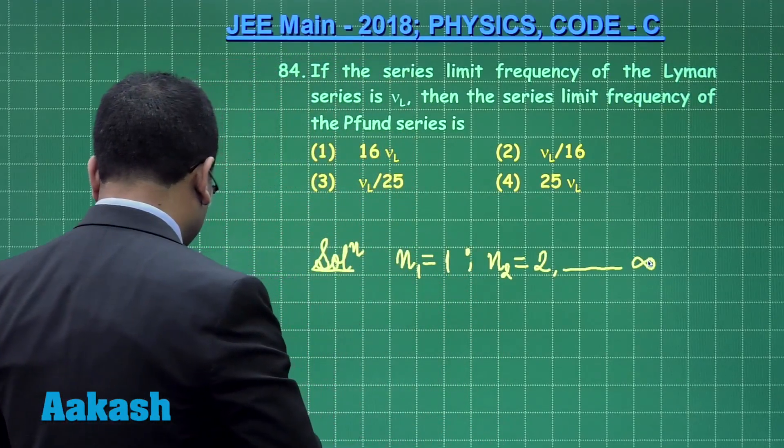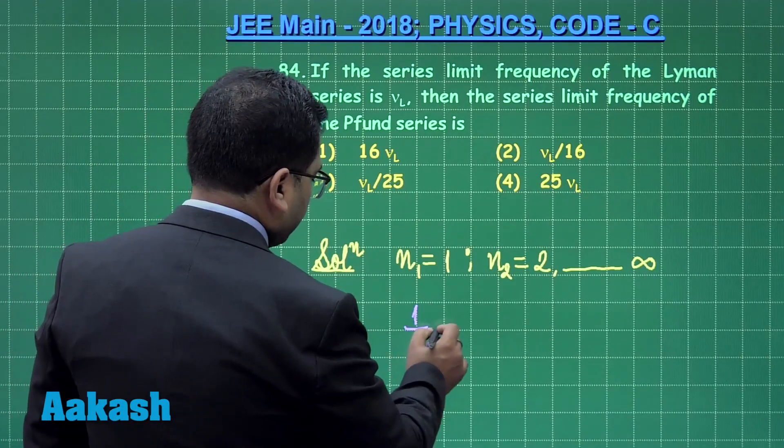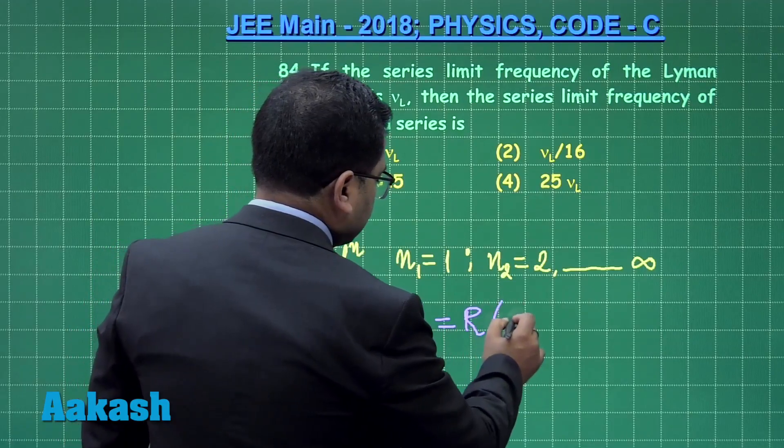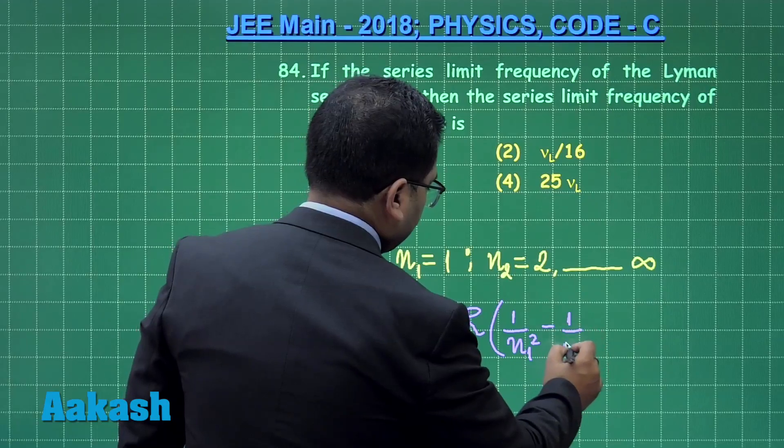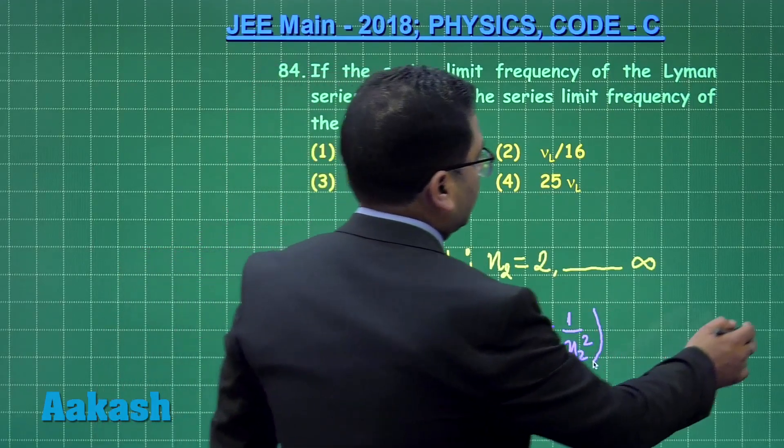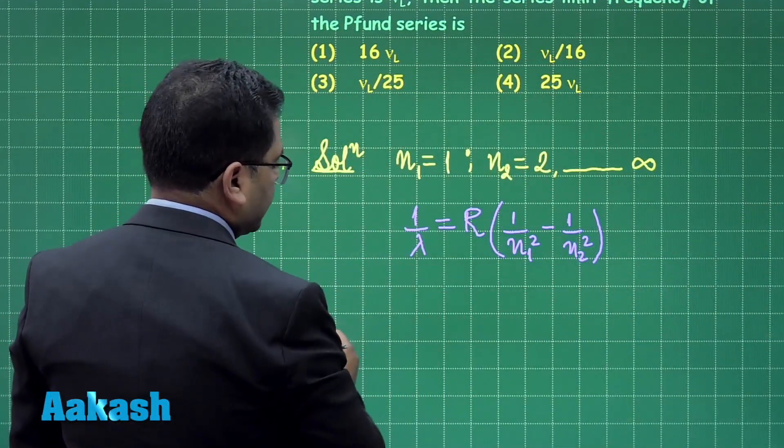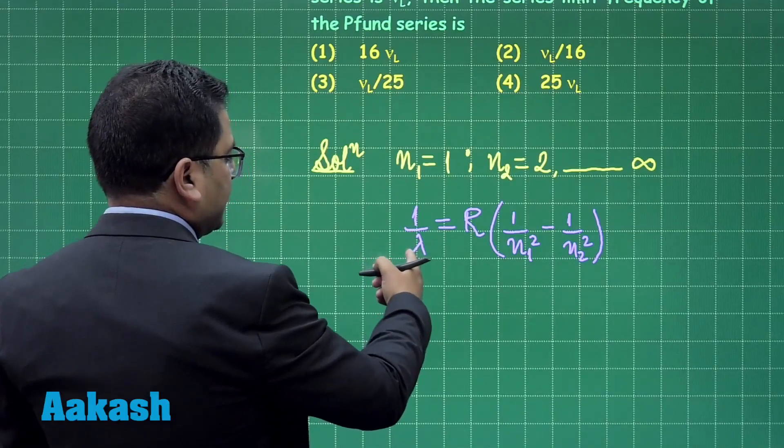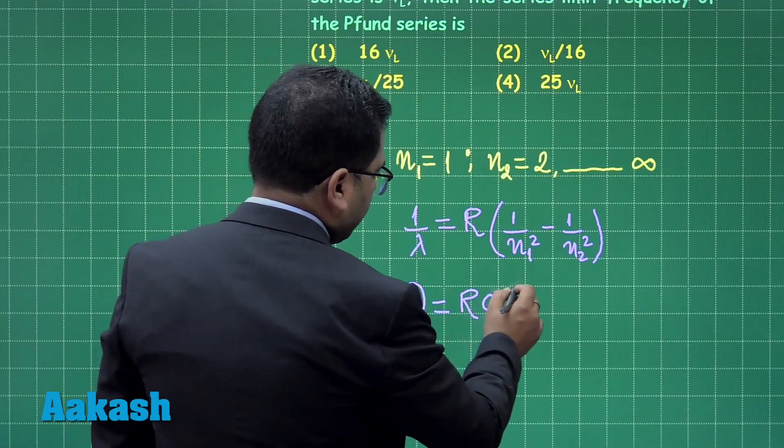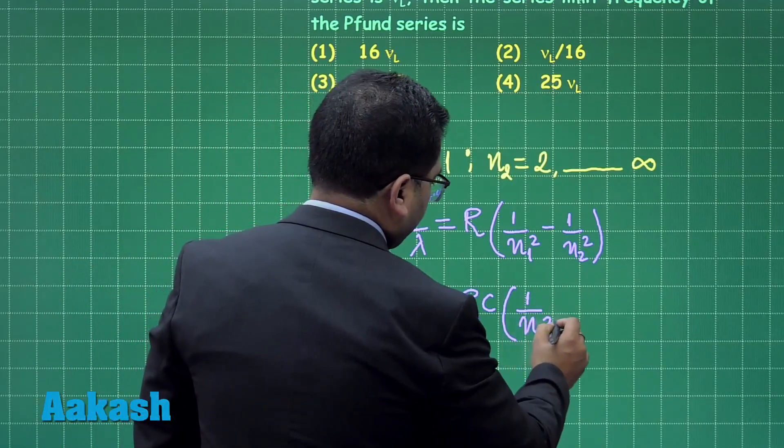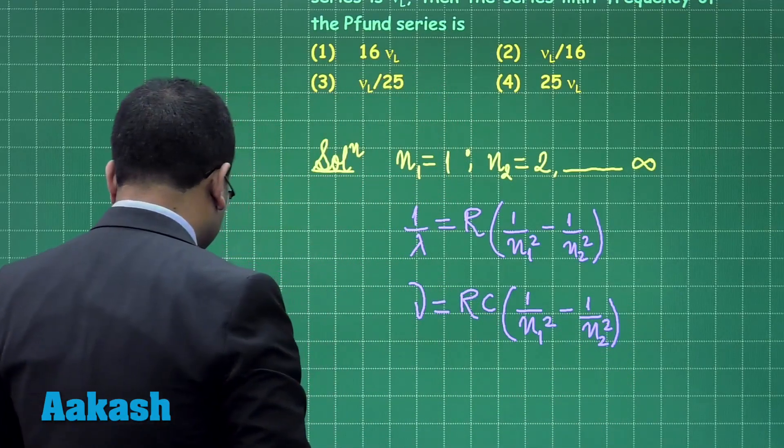On the basis of that, let us try to solve it. 1 by lambda is R, Z, that will be 1, so 1 by n1 square minus of 1 by n2 square is the formula. Now we need to calculate the frequency. So that is going to be lambda is C by nu. So nu is going to be R times C 1 by n1 square minus 1 by n2 square. Now it is just time to put the value.